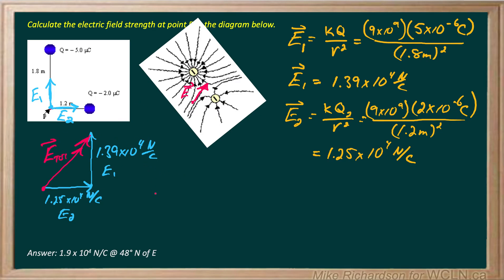All I need to do is Pythagoras. So my total electric field is simply going to be 1.39 times 10 to the 4 all squared, plus 1.25 times 10 to the 4 all squared. And then I have to take a square root. So it's just Pythagoras, A squared plus B squared equals C squared. And I get my answer of 1.9 times 10 to the 4 newtons per coulomb.